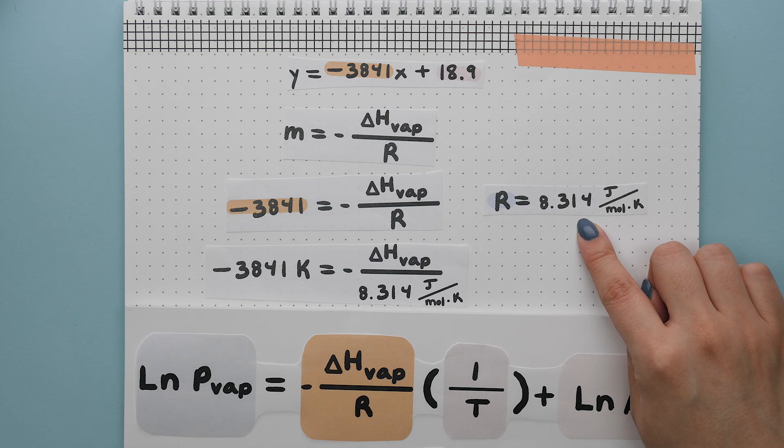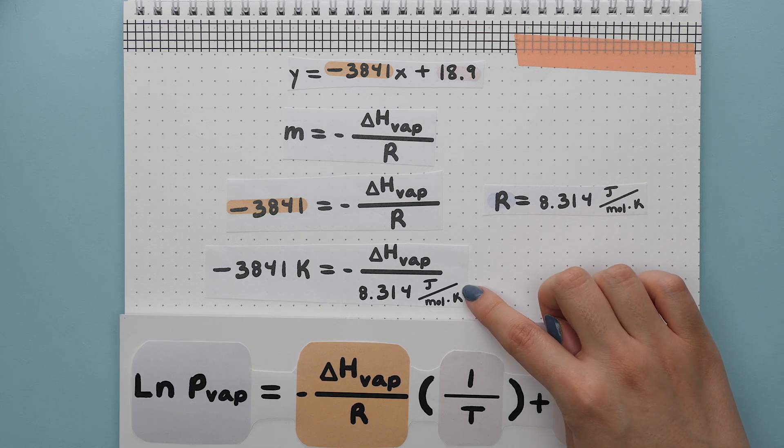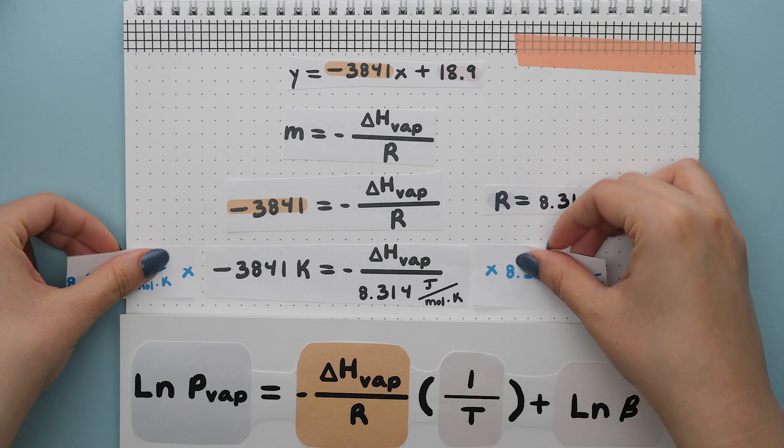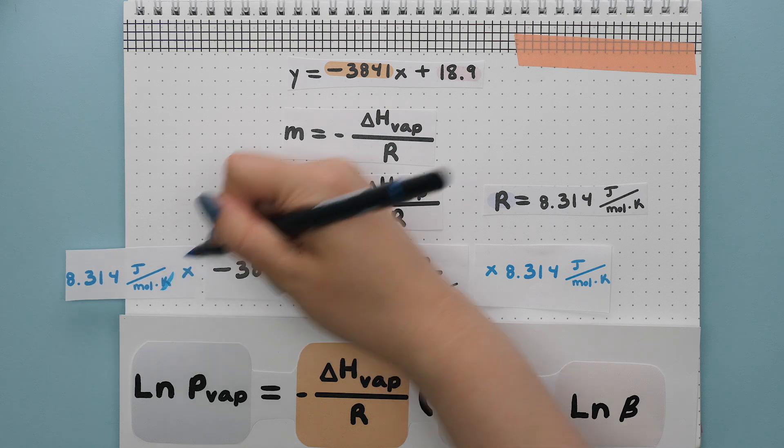Next, r is a known constant, which is this value. We can plug this in and solve for the heat of vaporization by multiplying both sides by this value and these units cancel.